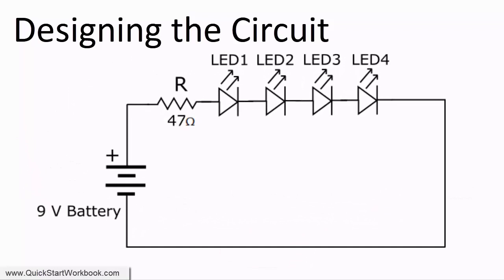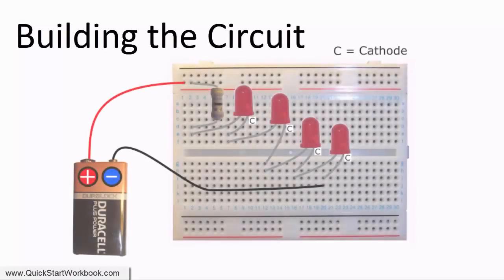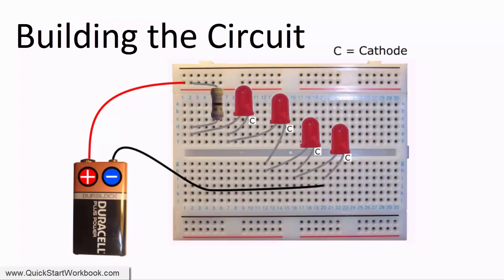So having designed the circuit, we can build it on a breadboard. And here it is. You need to make sure that the LEDs are all connected the correct way round, so that the current flows from the anode through the LED and out through the cathode.